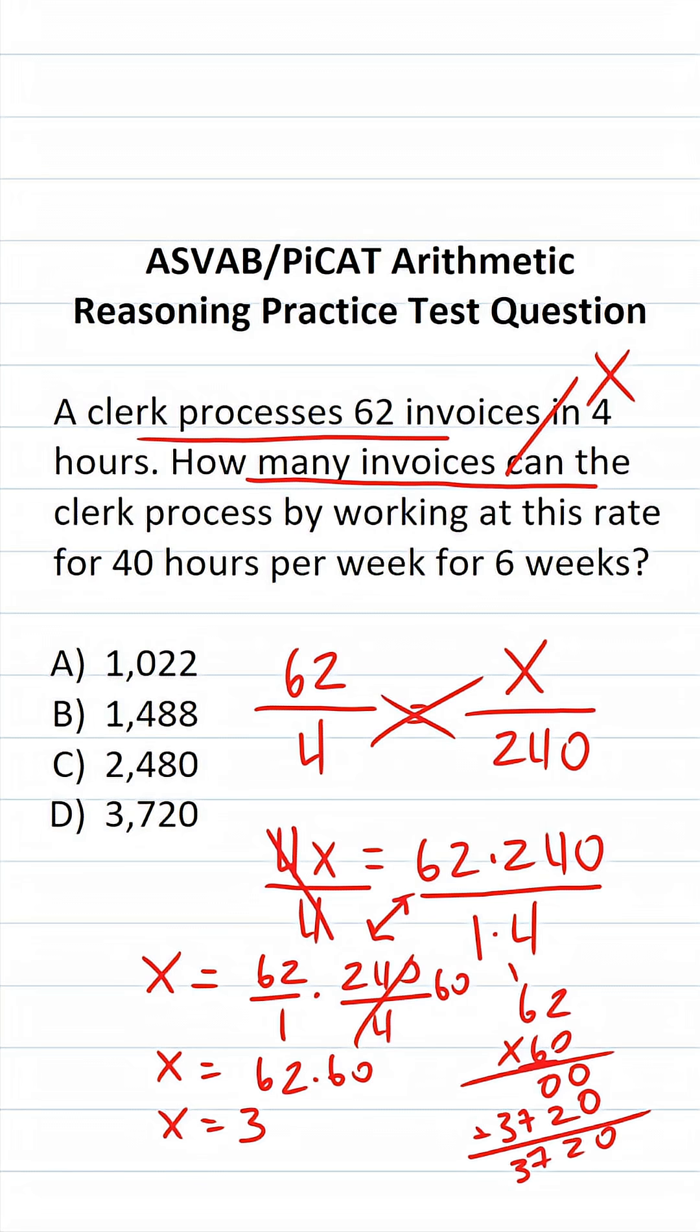So we can see X is going to be 3,720. In other words, if this clerk works for six weeks and works 40 hours per week, they can process D, 3,720 invoices during that time.